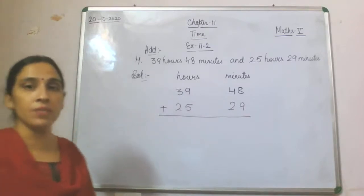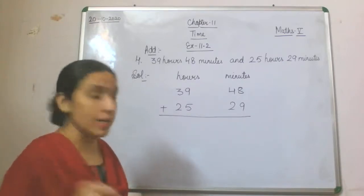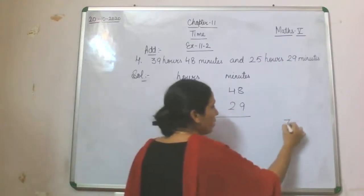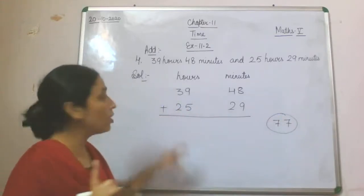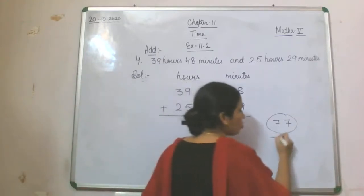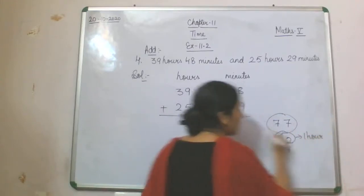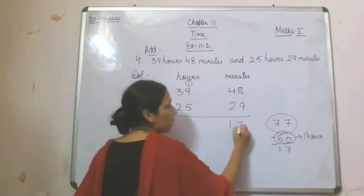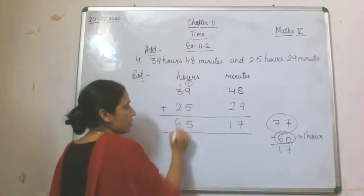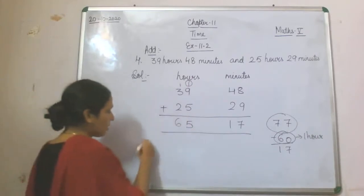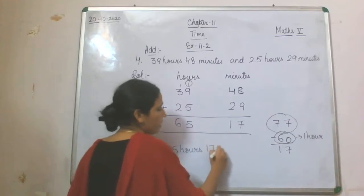After arranging it into columns, we make separate headings of hours and minutes. Now we add the minutes part first: 8 plus 9 equals 17, carry 1; 4 plus 2 is 6, plus 1 carry is 7, so the total is 77 minutes. Out of 77, you can take out 60 minutes to make 1 hour. So I subtract 60 minutes; that 60 minutes becomes 1 hour and is added to the hours column. You are left with 17 minutes, and the hours total is 9 plus 1 is 10, plus 5 is 15, giving 65. So the sum is 65 hours 17 minutes.